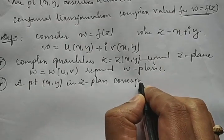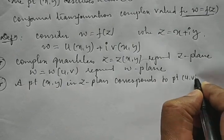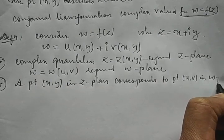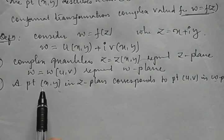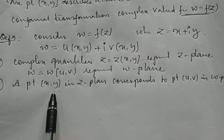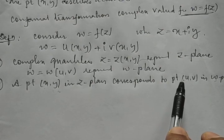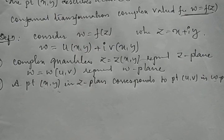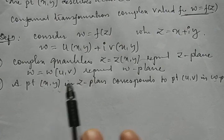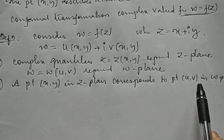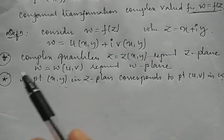A point (x, y) in the z-plane corresponds to a point (u, v) in the ω-plane. This is a simple but important relation: any changes made in the z-plane through x and y will automatically produce corresponding changes in the ω-plane with respect to u and v.